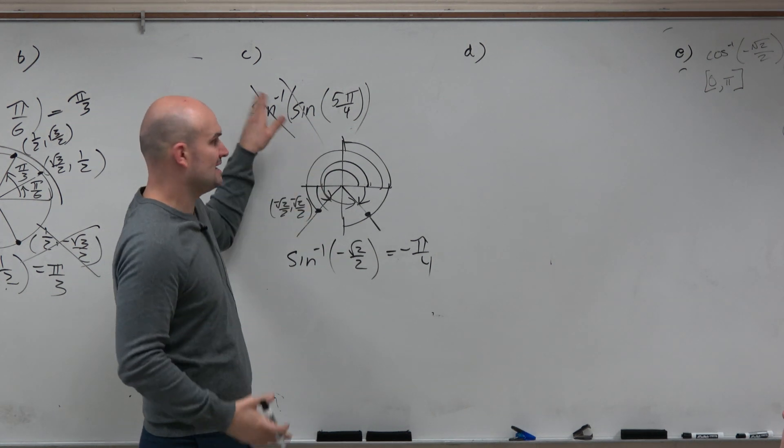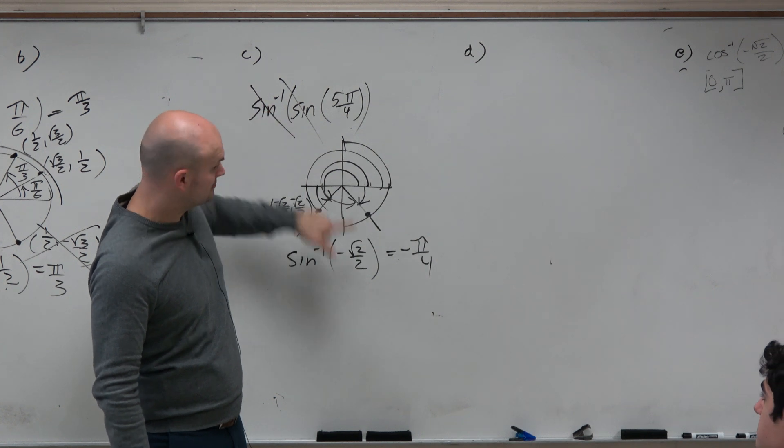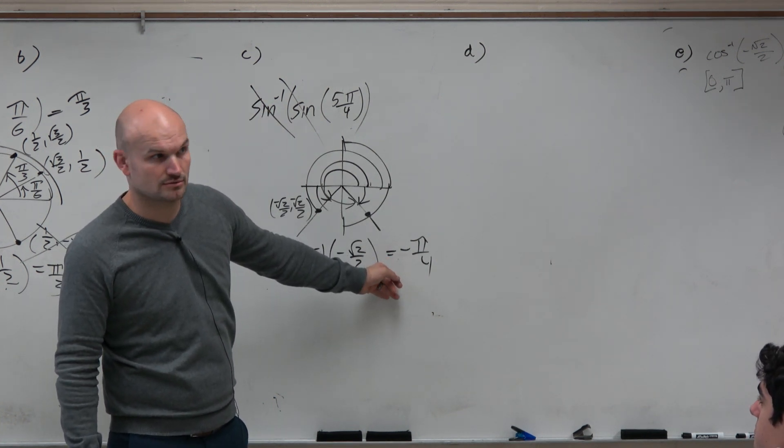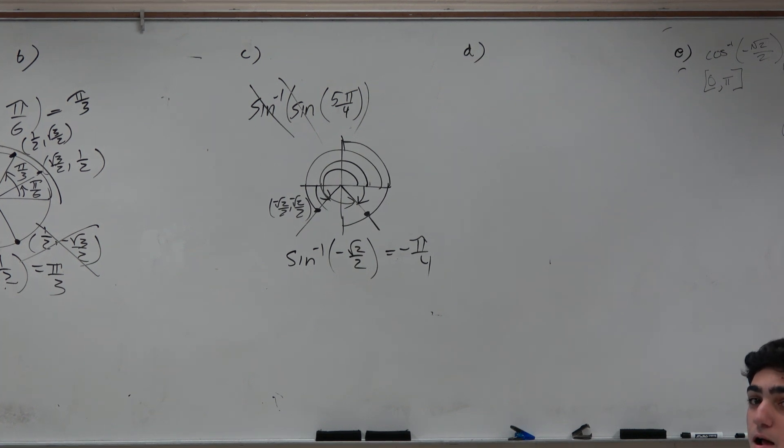So thankfully, I did not cancel those out and choose that as my multiple choice answer. Because they don't cancel each other out. The answer is negative pi over 4. So don't get stuck by that. However, do you guys want to see an answer where they would cancel out?